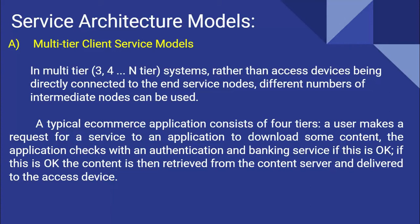The third point is multi-tier, which means three, four, or more tiers. Rather than access devices being directly connected to end services, different numbers of intermediate nodes can be used. For example, if you upload data to Google Drive and generate a shareable link distributed among students, clients can access your data until the link is valid.